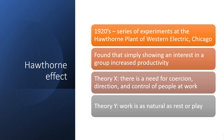Theory X says that there is a need for correction, direction, and control of people at work. If we have learned how to work in the proper direction, definitely the productivity increases. Theory Y says that work is as natural as rest or play. In Theory Y, workers will do their own work and don't need to be told anything.